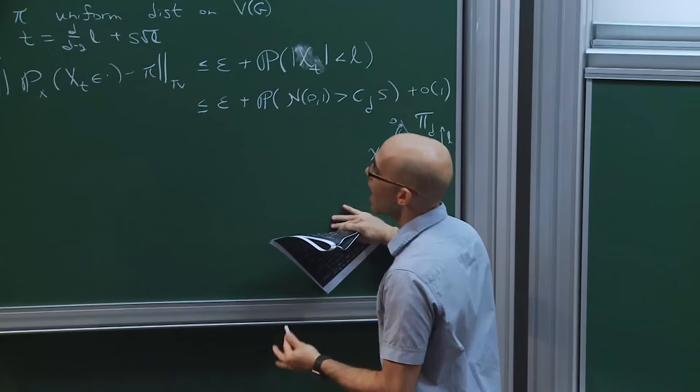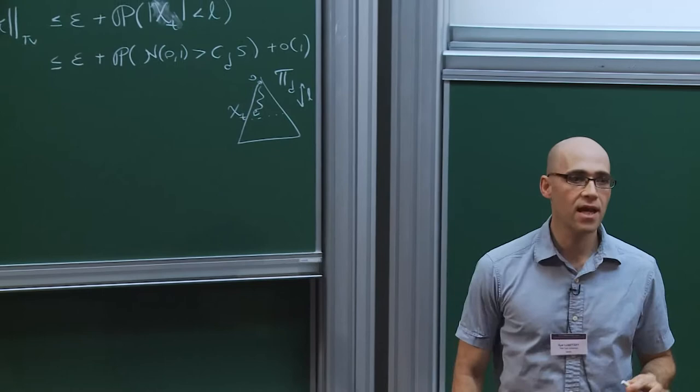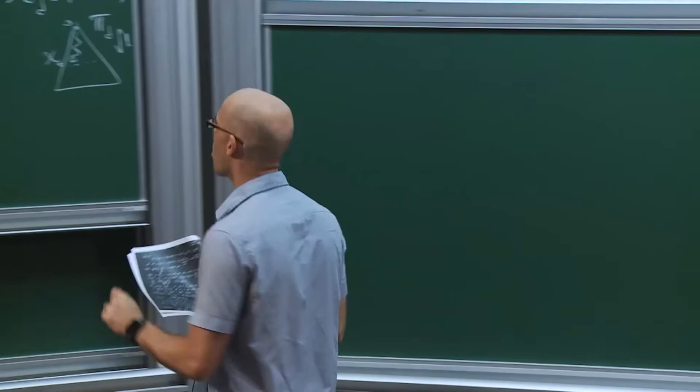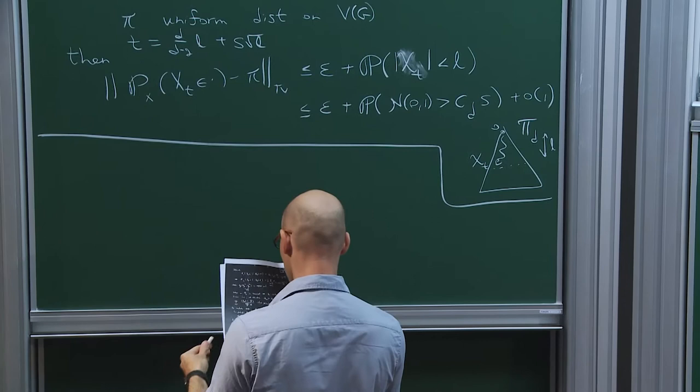This is just an estimate for simple random walk on a d-regular tree, which is nothing more than a one-dimensional biased random walk, because of the symmetry. So that's what we ended with. It means that if we have a corresponding lower bound that gives essentially the same value, this will complete our reduction to the non-backtracking random walk.